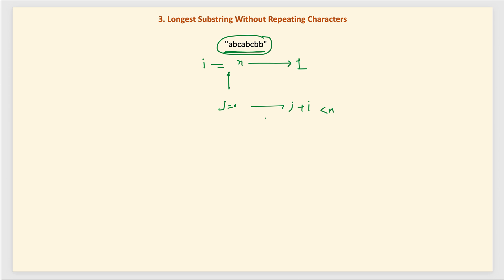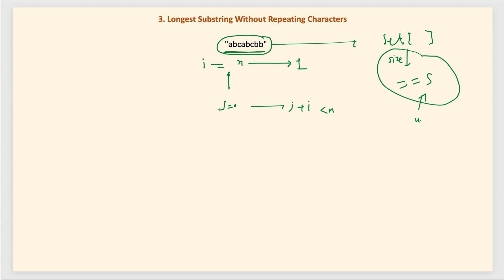To check whether a string contains any repeated character, you can create a set of those characters. If the size of the set equals the length of the substring, then all characters are unique. In the example, 'abcabc' has only 3 unique characters, so the set size is 3 while the string length starts at 8. We continuously decrease until we reach length 3, where 'abc' is the first unique substring found.